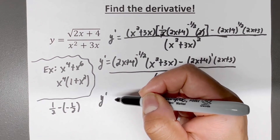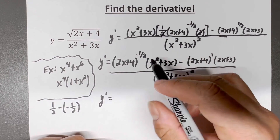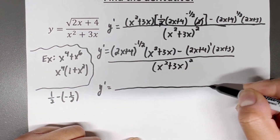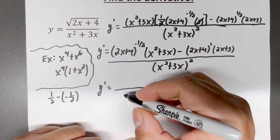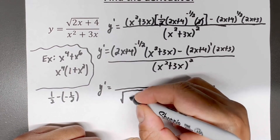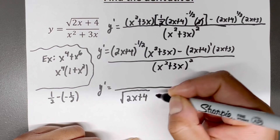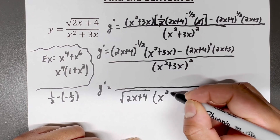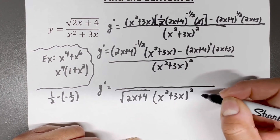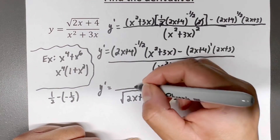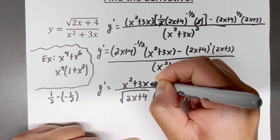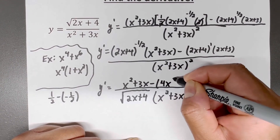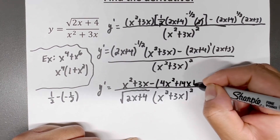Now at the top, I notice this thing is raised to the negative one half power. What I can actually do is just put that thing at the bottom so I don't have to deal with it anymore. It's raised to the negative one half, so I'm going to put 2x plus 4 down at the bottom as positive one half. And I might as well put the x squared plus 3x down there with it as well. At the top, since I'm multiplying that out, I would get 4x squared plus 14x plus 12.